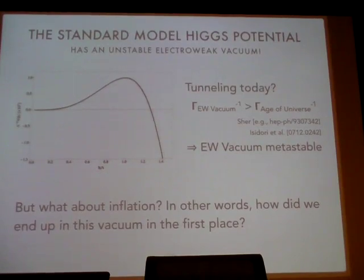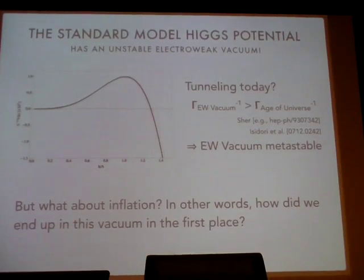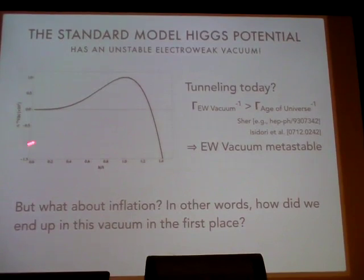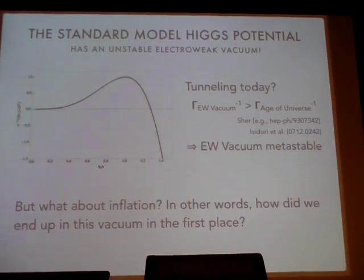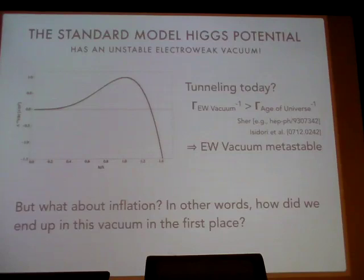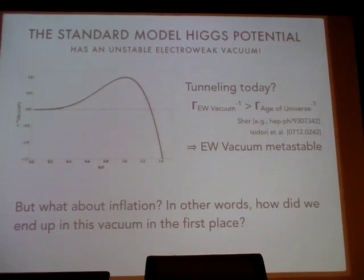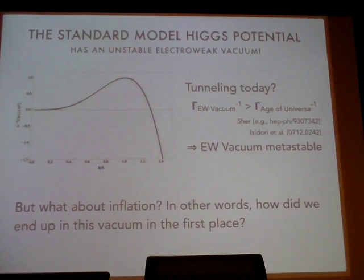Q: 'Is this curve a two-loop combination?' This is actually using two-loop beta functions and one-loop Coleman-Weinberg. It holds at higher loop orders too.